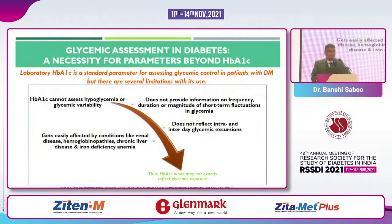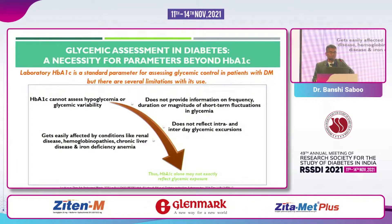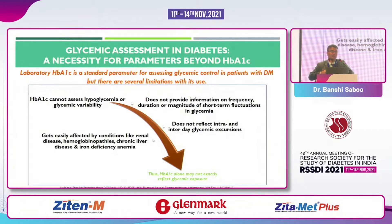The glycemic assessment in diabetes has used HbA1c since long. First we used to do glucose, then instead of doing multiple glucose measurements we started getting HbA1c, which is an average of 3 months. Now we are moving beyond A1c — we are no more only talking about A1c; we also want to know what is happening in between.